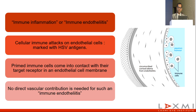When we say that endothelitis is immune inflammation or immune endothelitis, it is when cellular immune attacks on the endothelial cells are happening and there is marked presence of HSV antigens. Primed immune cells come in contact with the target receptors on the endothelial cell membrane, and there is no direct vascular contribution for immune endothelitis.